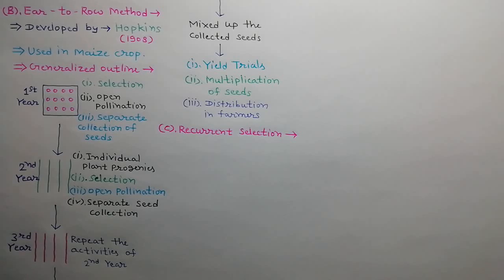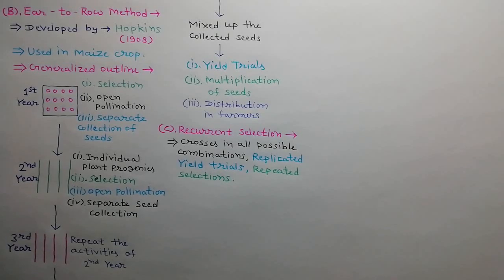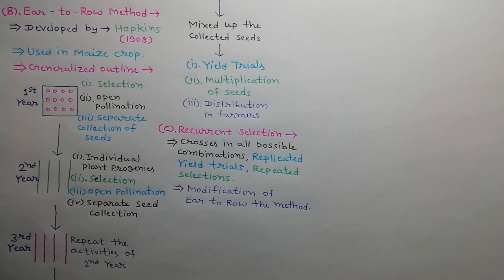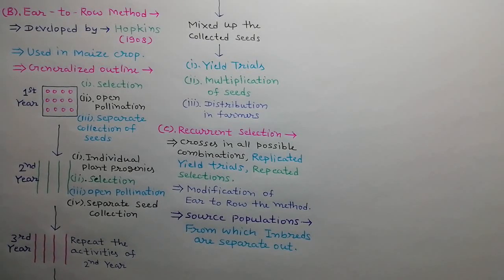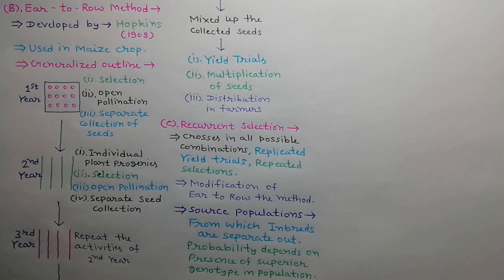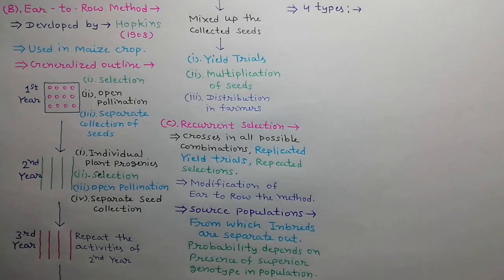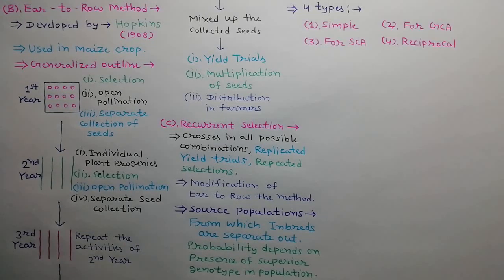The third method is recurrent selection. In this method, crosses are allowed in all possible combinations, replicated yield trials are performed, and repeated selections are carried out. This method is a modification of the ear-to-row method. Populations from which inbreds are separated out are called source populations. The probability of getting a superior inbred depends on the frequency of superior genotypes present in that population. There are four types of recurrent selection: simple, for GCA, for SCA, and reciprocal.